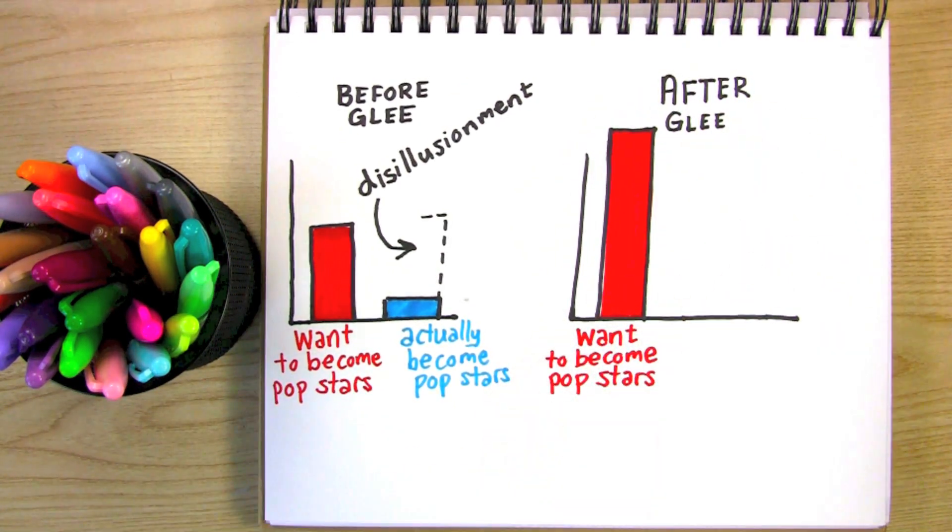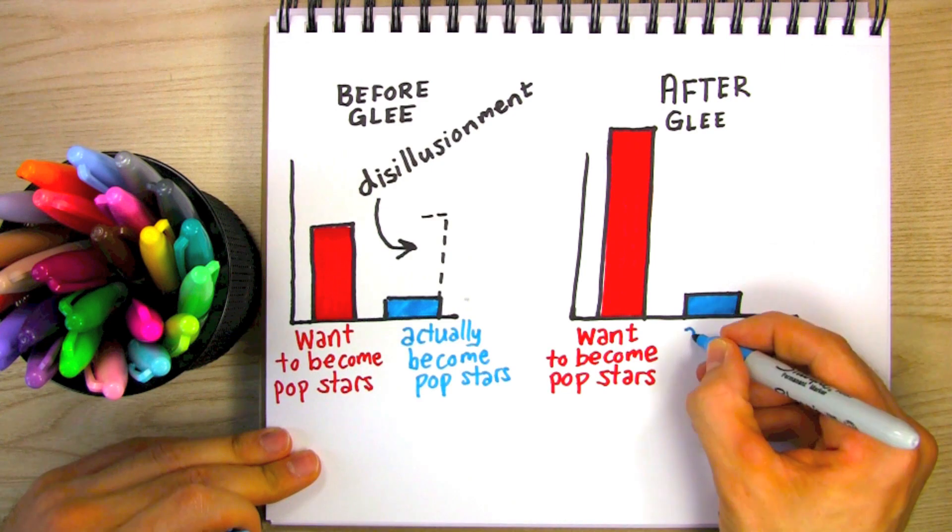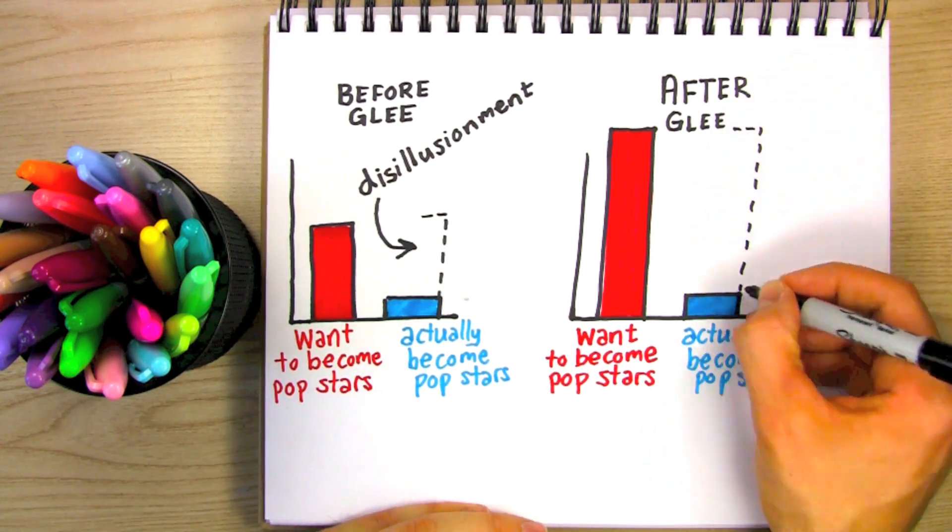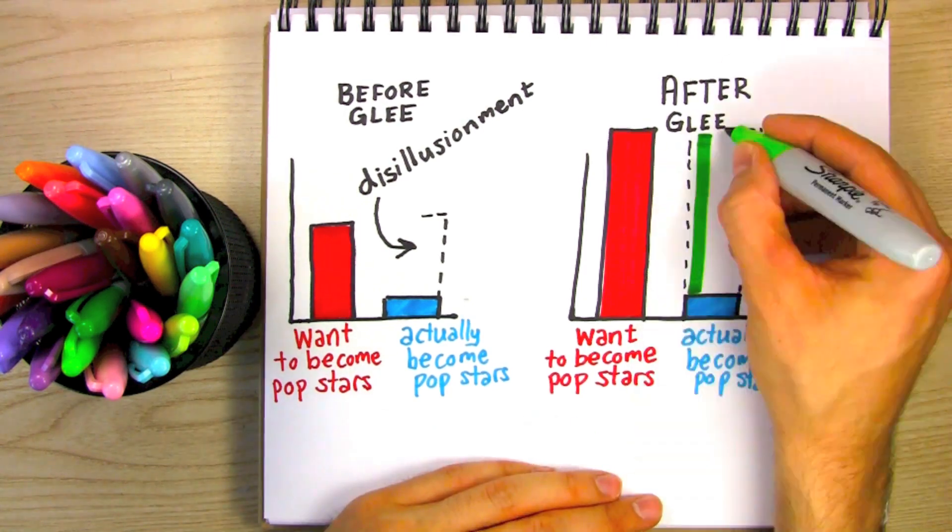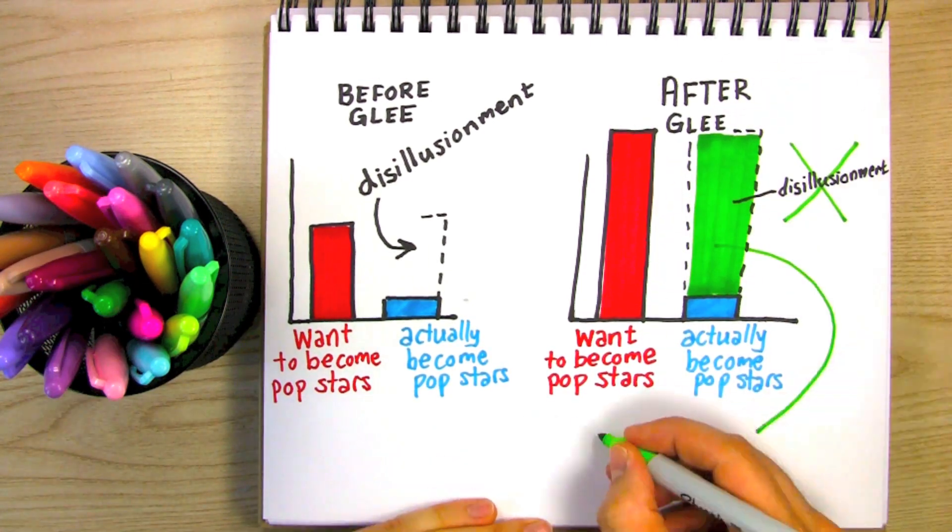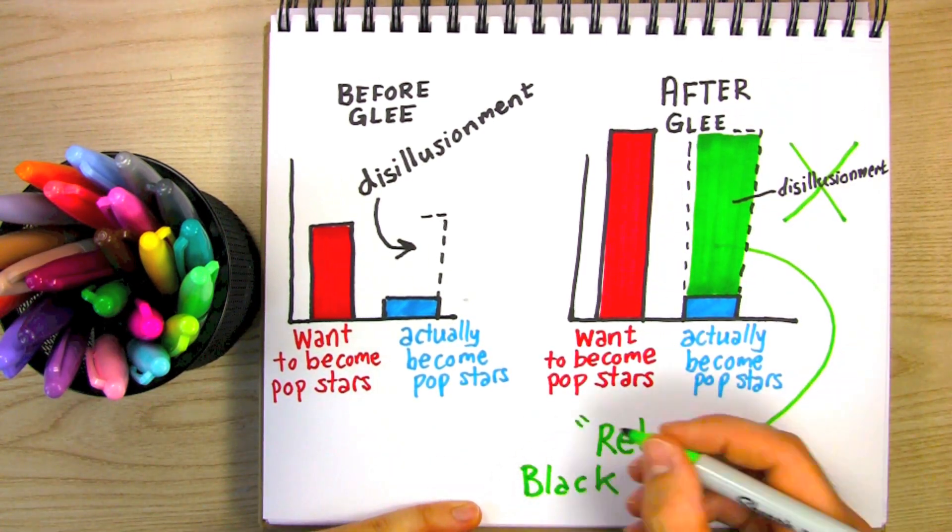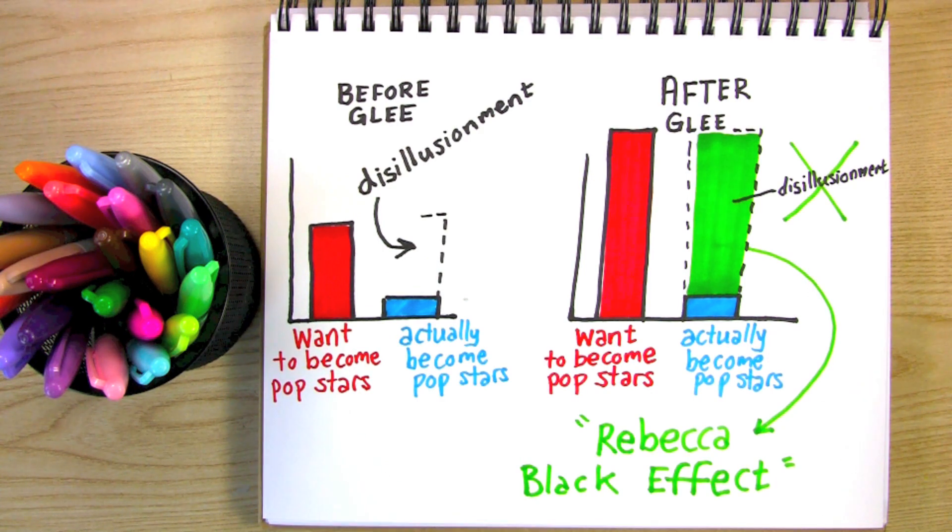meaning that Glee was on track to increase the total disillusionment in our society. But that all changed when Rebecca Black came along and proved that anyone, I mean literally anyone, can become a pop star.